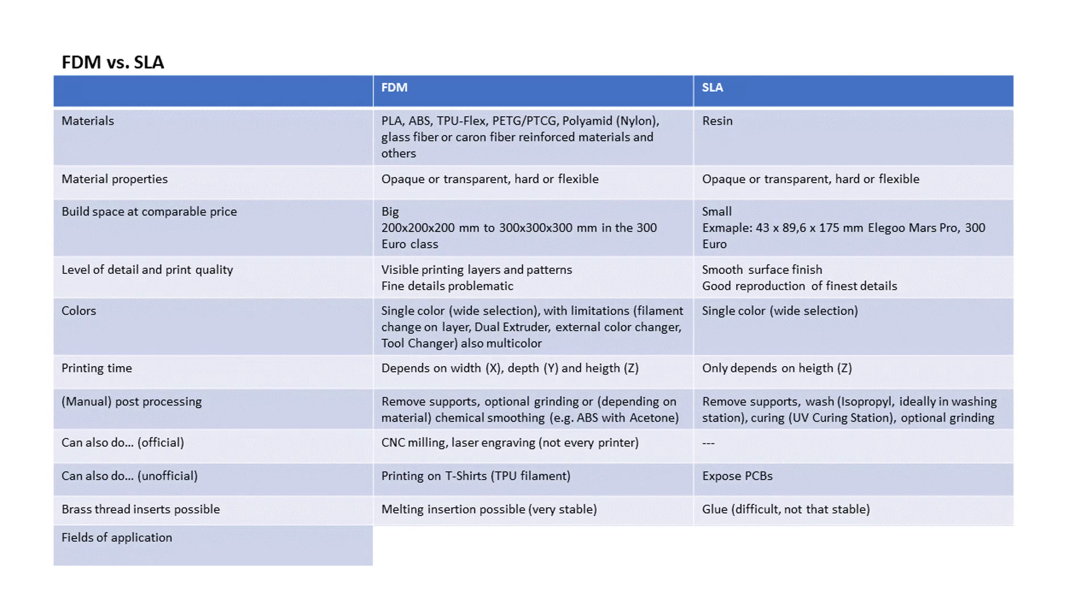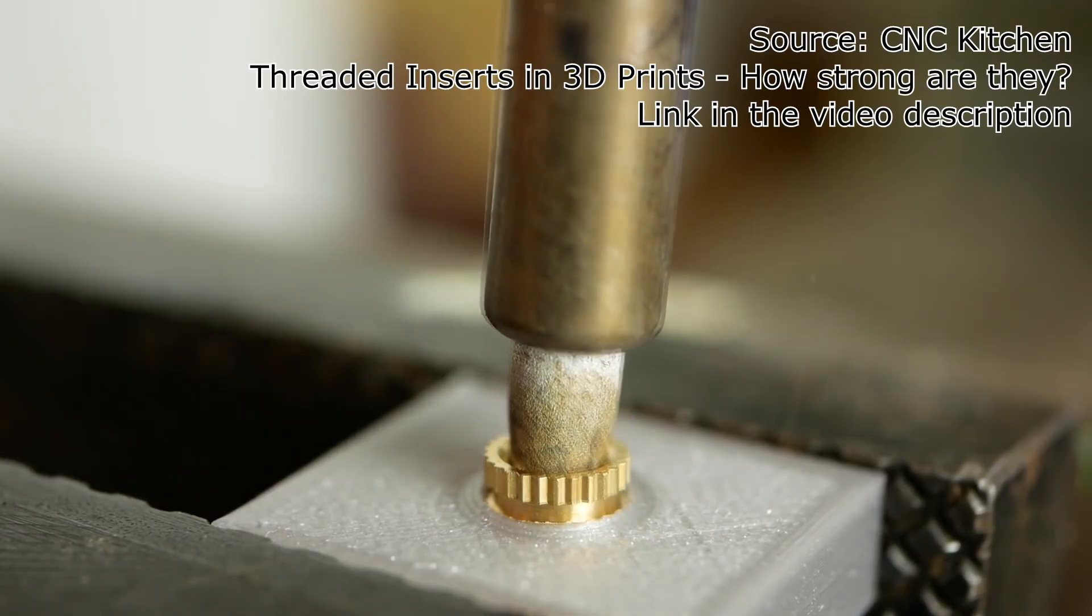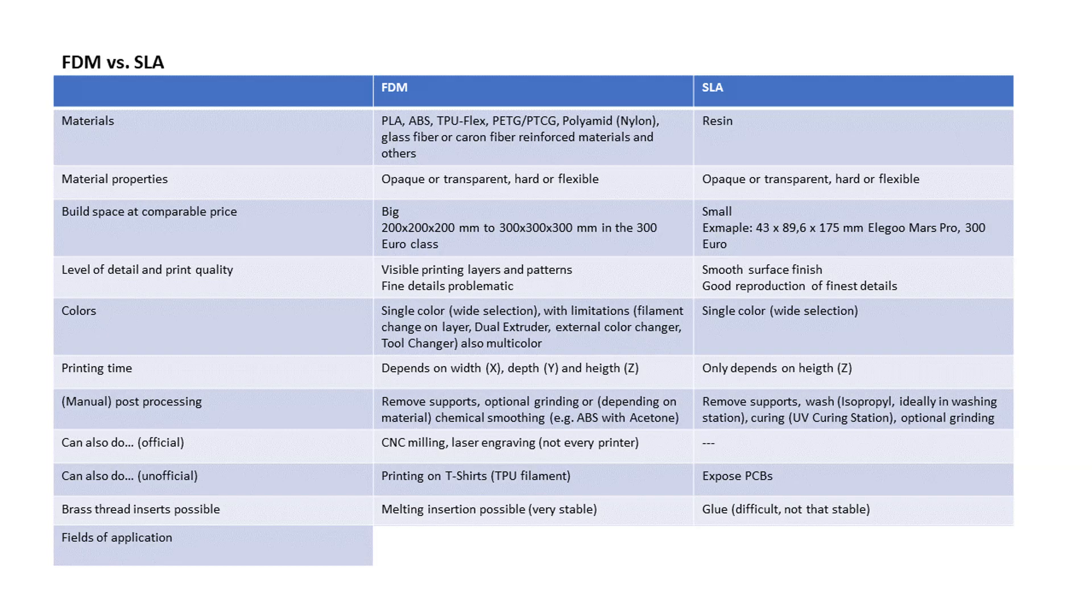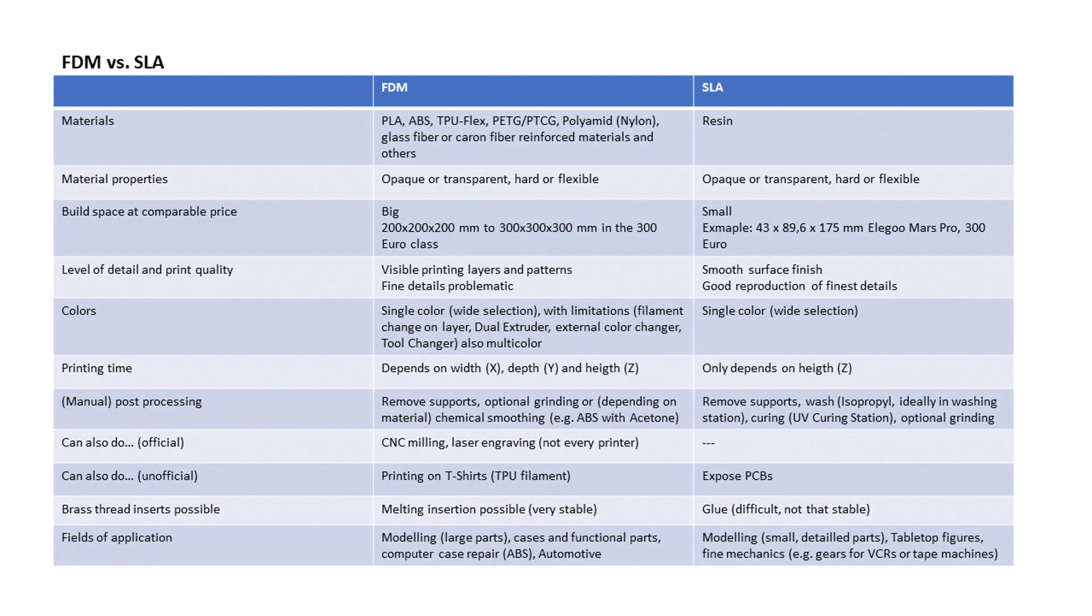If you want to build case parts that require brass thread inserts, your winning match is the FDM printer. Melting in these inserts is only possible with plastic. For resin you can glue them in, but this is not as stable. In the hobby area, FDM is typically used where size and functionality matters. SLA is more the technology for fine details and fine mechanics.